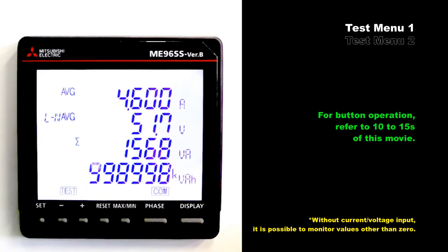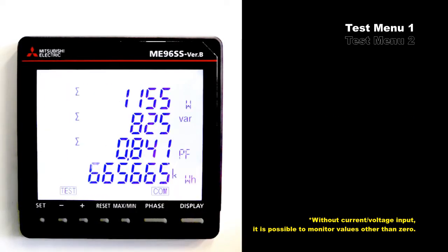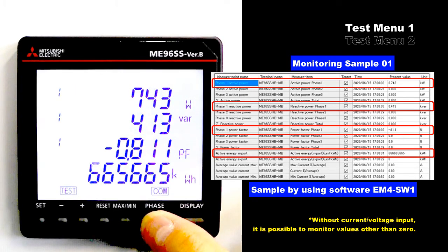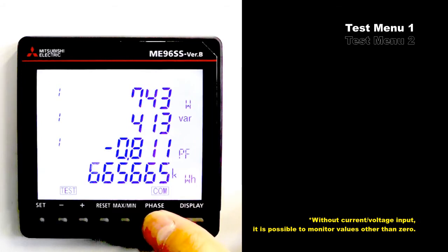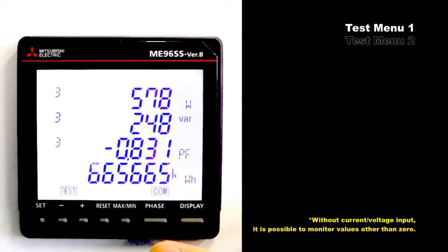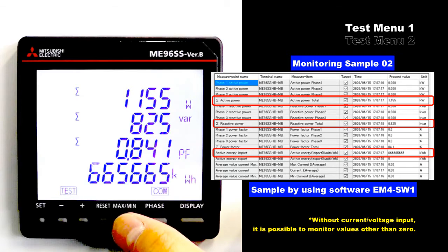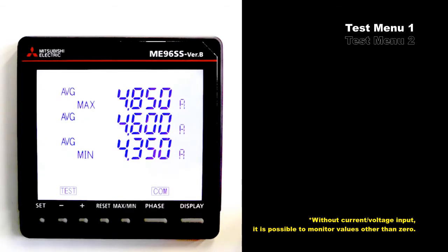For button operation, refer to 10 to 15 seconds of this movie. Monitor elements and values are measuring items and values displayed on the screen. The monitor values of measuring items that are not displayed on the screen are 0. The power factor only is 1.000.